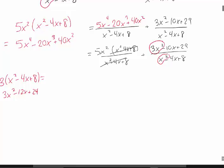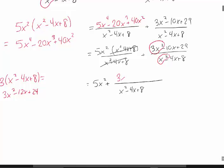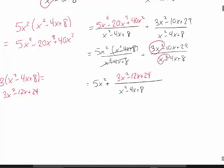So I have my 5x squared, and then for this fraction on the right I'm going to start with 3x squared minus 12x plus 24. But now I have to fix it because I can't actually change my fraction. The 3x squared matches, but I actually have minus 10x and I wrote minus 12x, so I have to fix it by adding back 2x. And I actually have plus 29 but I wrote plus 24, so I have to fix it by adding back 5.